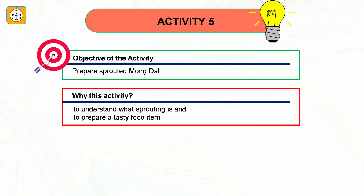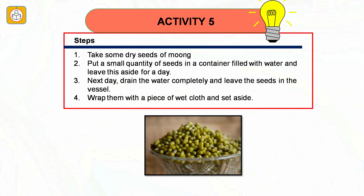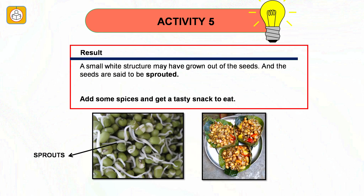Activity number five: Prepare sprouted moong dal. This activity helps understand sprouting and also prepares a simple and tasty food item. Steps: Take some dry seeds of moong dal. Put a small quantity in a container filled with water and leave aside for a day. Next day, drain the water completely and leave the seeds in the vessel. Wrap them with a piece of wet cloth and set aside. After one day, a small white structure may have grown out of the seeds — they are now sprouted. Add some spices for a tasty snack.